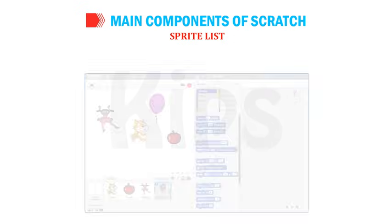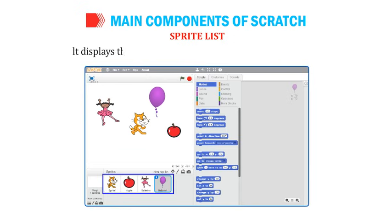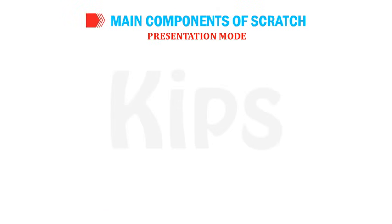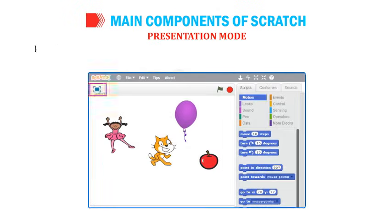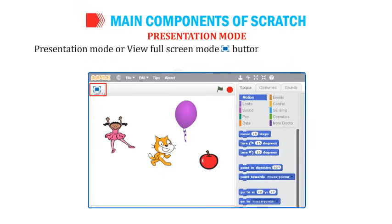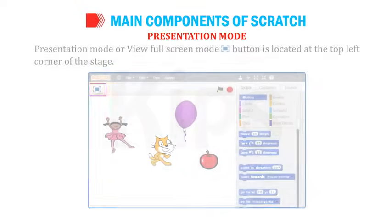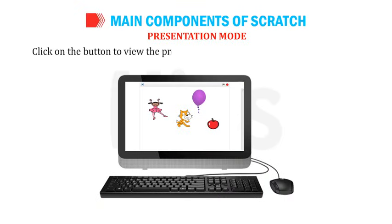Sprite List displays the thumbnails of all the sprites used in a project. The Presentation Mode or View Full Screen button is located at the top left corner of the stage. Click on it to view the presentation of your project in full screen mode.